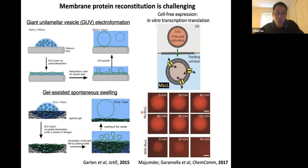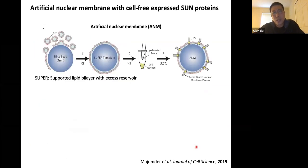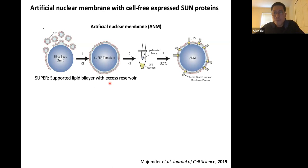We wanted to use the system to study SUN proteins. One way to reconstitute membrane proteins is by depositing them on silica beads. If you take a glass bead, you can deposit SUVs on it, generating what we call a super template — a supported lipid bilayer with an excess membrane reservoir. We then add this lipid-coated bead to a cell-free expression reaction and incubate for some time. If the reaction is successful, you get incorporation of the membrane protein into the lipid-coated beads.